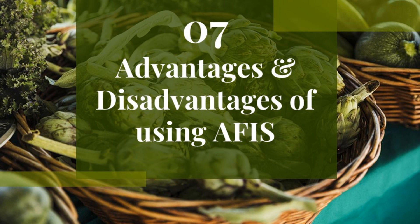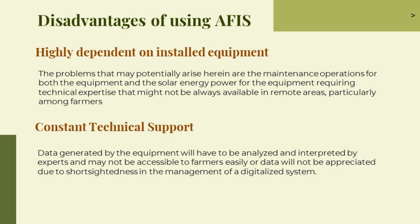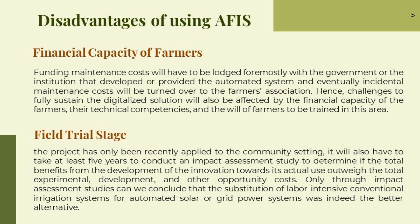While there are also disadvantages of using AFIS, such as being highly dependent on installed equipment, the problems that may potentially arise include maintenance operations for both the equipment and the solar energy power, requiring technical expertise that might not always be available in remote areas, particularly among farmers. Constant technical support is needed, as data generated by the equipment will have to be analyzed and interpreted by experts and may not be easily accessible to farmers, or data will not be appreciated due to short-sightedness in managing a digitalized system. Funding maintenance costs will have to be lodged primarily with the government or the institution that developed the automated system, and eventually maintenance costs will be turned over to the Farmers Association. Challenges to fully sustaining the digitalized solution will also be affected by the financial capacity of the farmers.